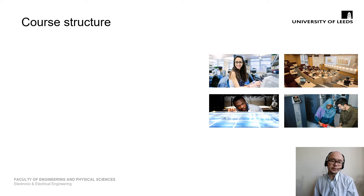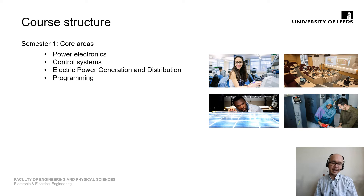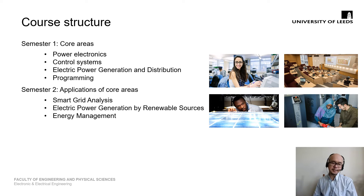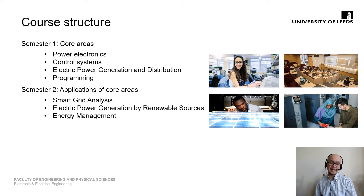Let me introduce the course structure of this MSc degree program. Initially, students are exposed to core areas developed in Semester 1, which include power electronics, control systems, electric power generation and distribution, and computer programming. In Semester 2, students focus on the application of these core areas, including smart energy, smart grid analysis, electric power generation by renewable energy sources, and energy management.